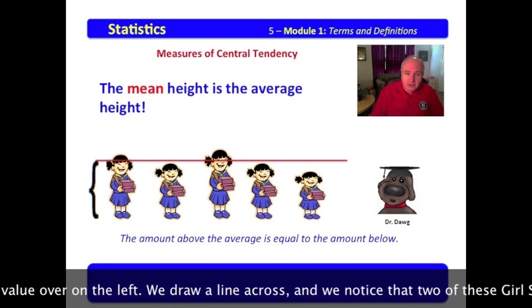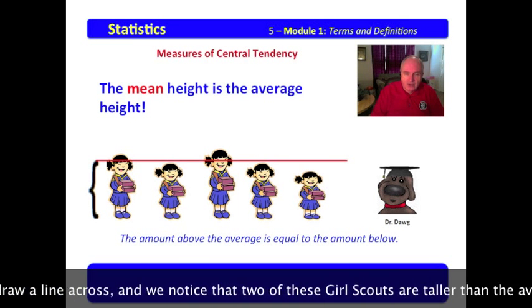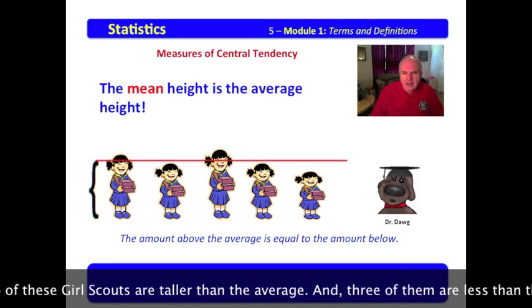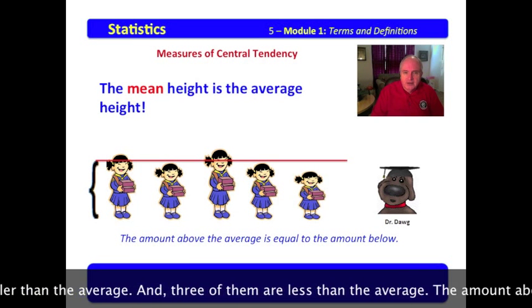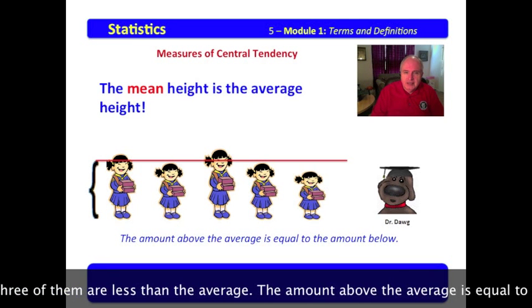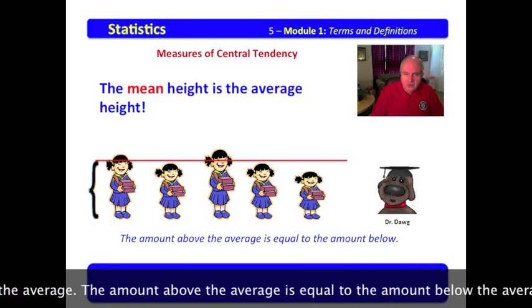We come up with this average value over on the left. We draw a line across, and we notice that two of these Girl Scouts are taller than the average, and three of them are less than the average. The amount above the average is equal to the amount below the average.